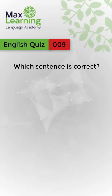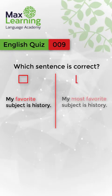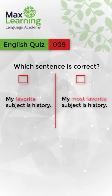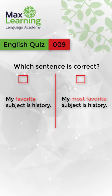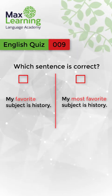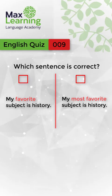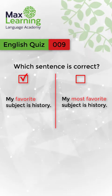Which sentence is correct? Option A: My favorite subject is history. Option B: My most favorite subject is history. I'll give you some time to think. The correct answer is: My favorite subject is history.